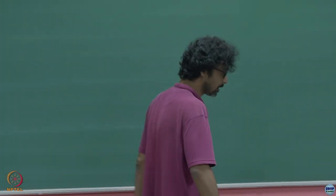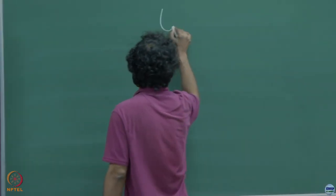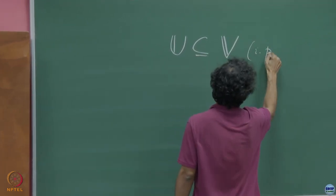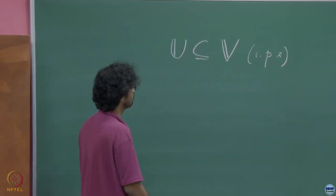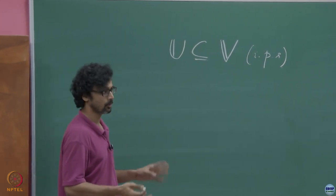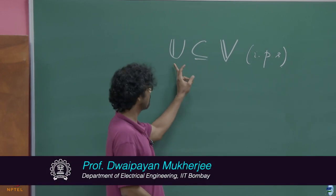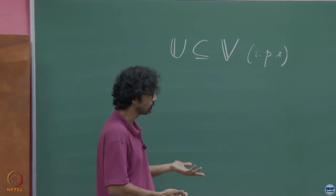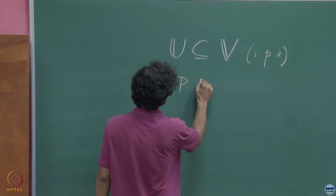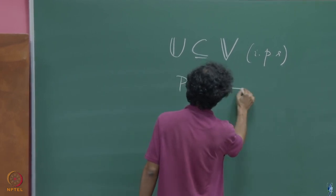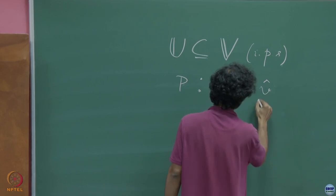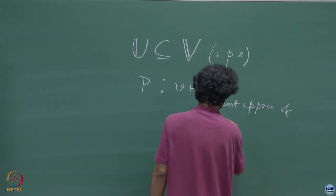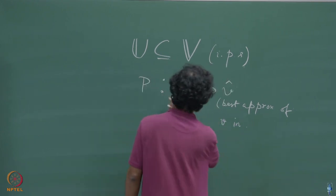In the previous lecture, we were talking about this projection matrix. We saw that if you have the subspace U contained inside this inner product space V, and if there is an idea of a best possible approximation of any vector in V onto subspace U, then this best possible vector can be obtained through this map, which we showed was a linear map and a projection map. This projection takes a vector V and maps it to V-hat, which is the best approximation of V in U.